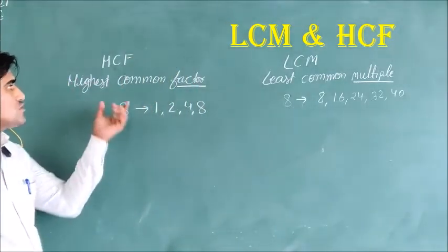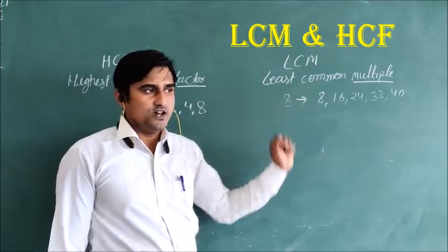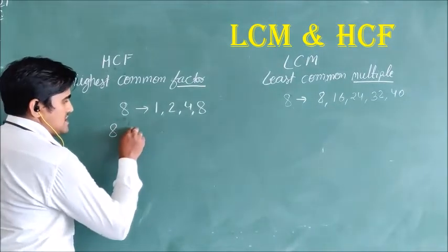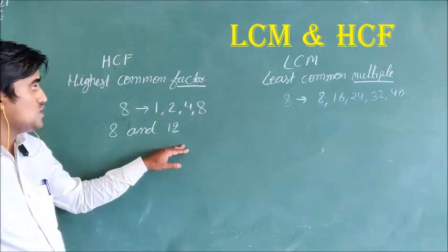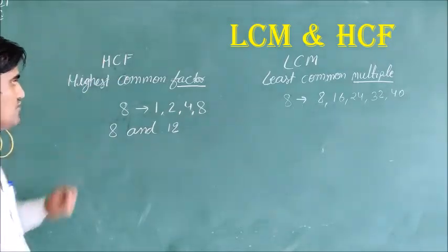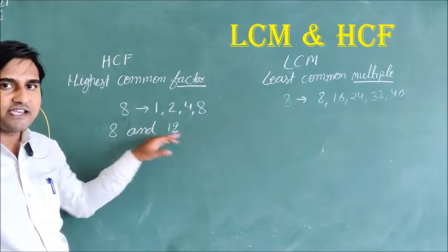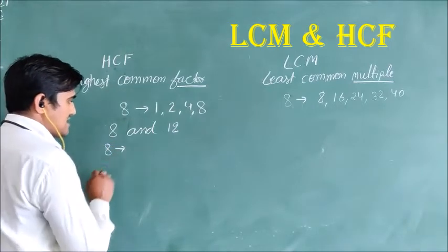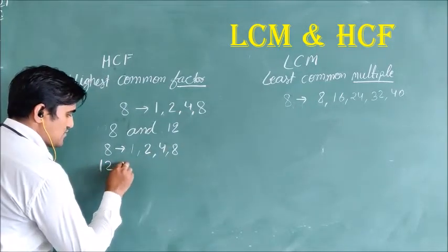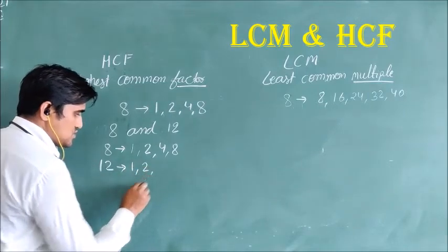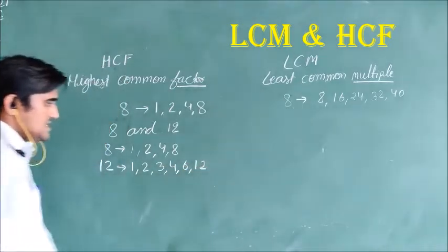Now we will find out HCF and LCM in different ways. First of all, we will find out the factors of each number. We will find the factors of 8 and 12. The factors of 8 are: 1, 2, 4, and 8. And the factors of 12 are: 1, 2, 3, 4, 6, and 12.